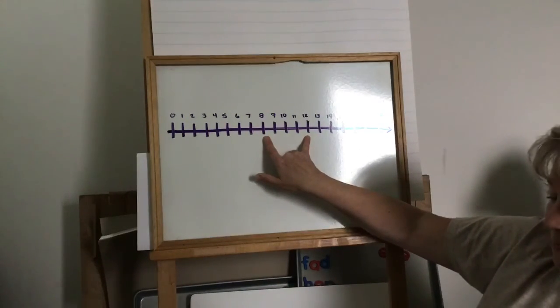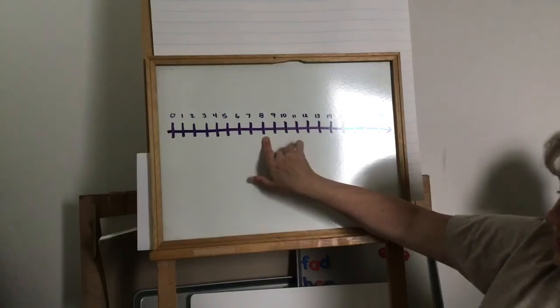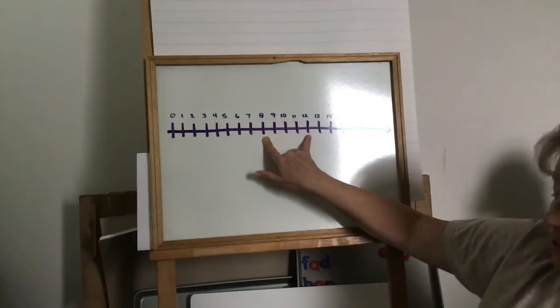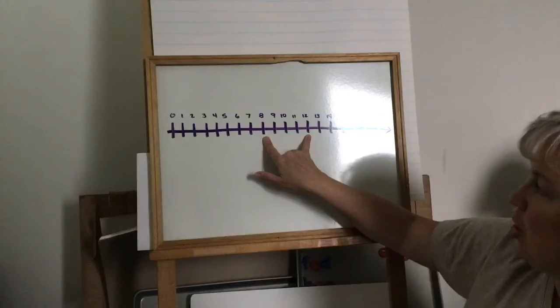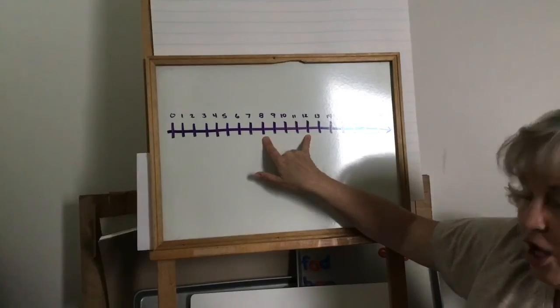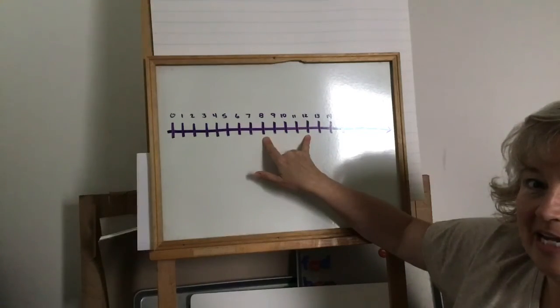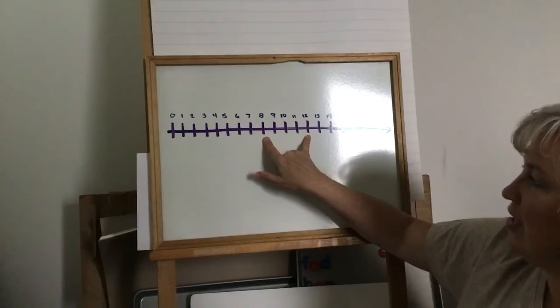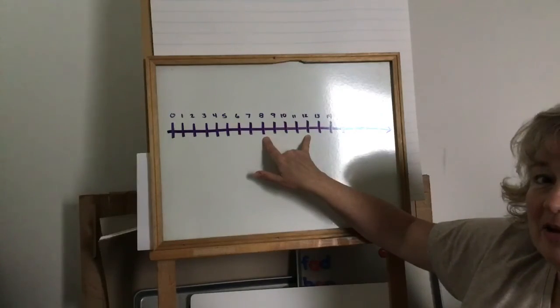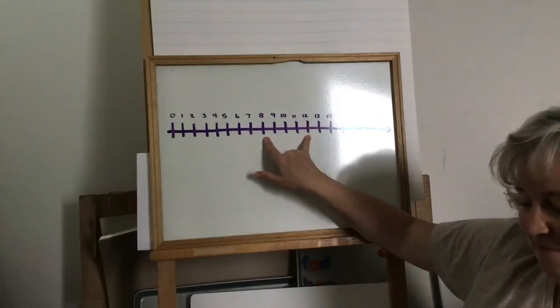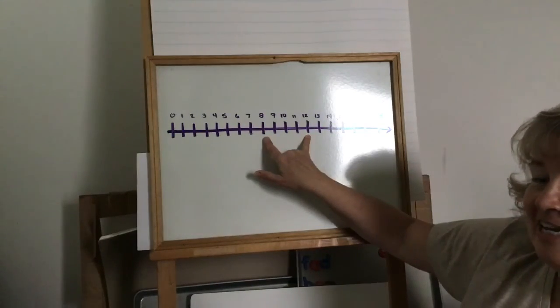I'll tell you the riddle again. I am more than eight. I am less than twelve. I am the number of toes on two feet. What am I? Go ahead and solve it. Say the answer right out loud. Did you get 10?